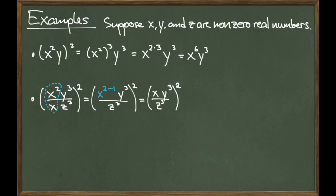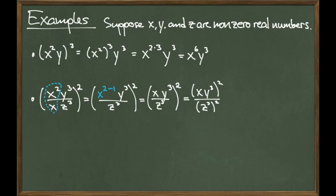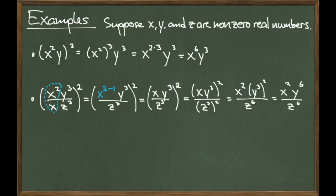Now that I have taken care of all common terms in the numerator and the denominator, I can take care of the power of 2 that sits outside of the entire fraction. The power of a quotient rule tells me to apply the power of 2 to the numerator and the denominator. In the numerator, we will need to use the power of a product rule, and in the denominator, we will need to use the power of a power rule. Doing so, and taking care of our last power of a power, gives us x squared times y to the sixth divided by z to the sixth.